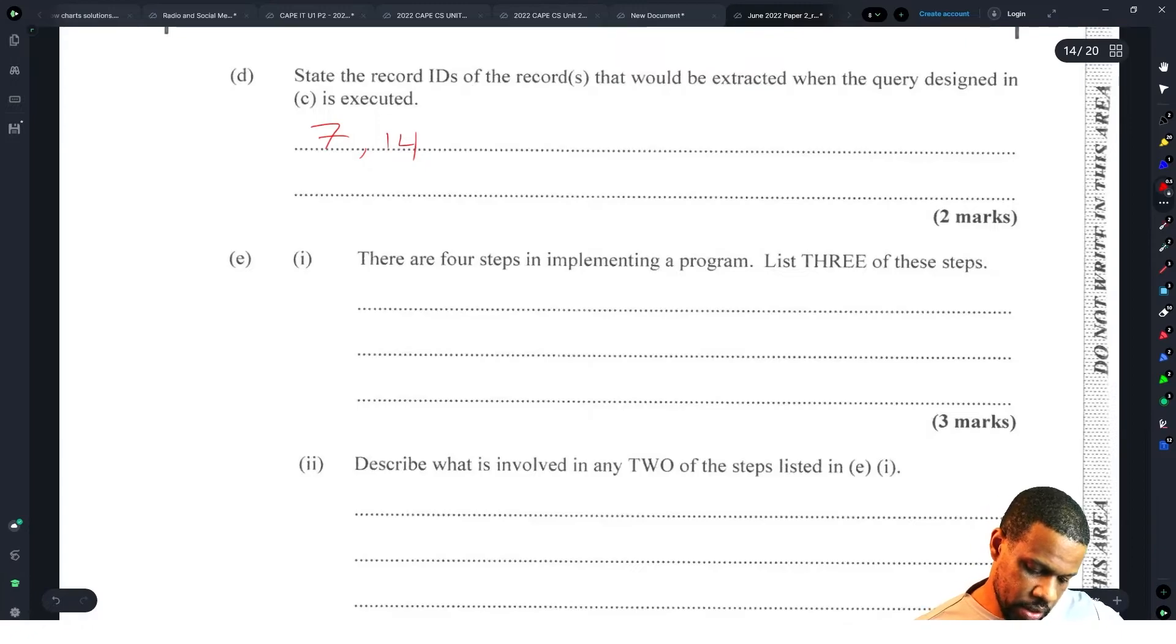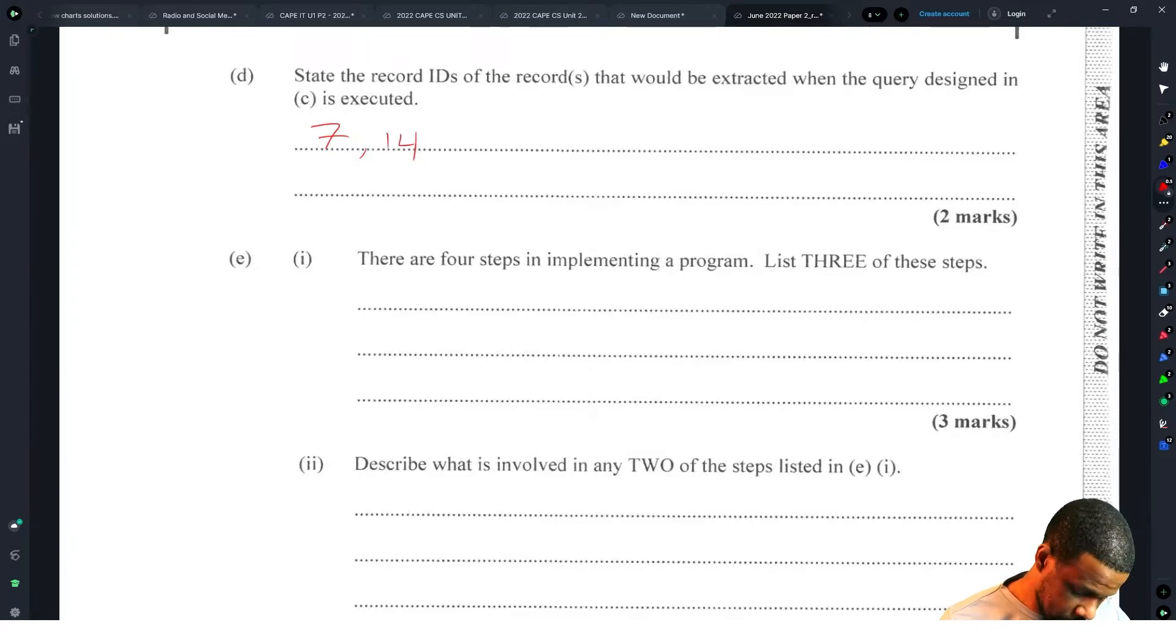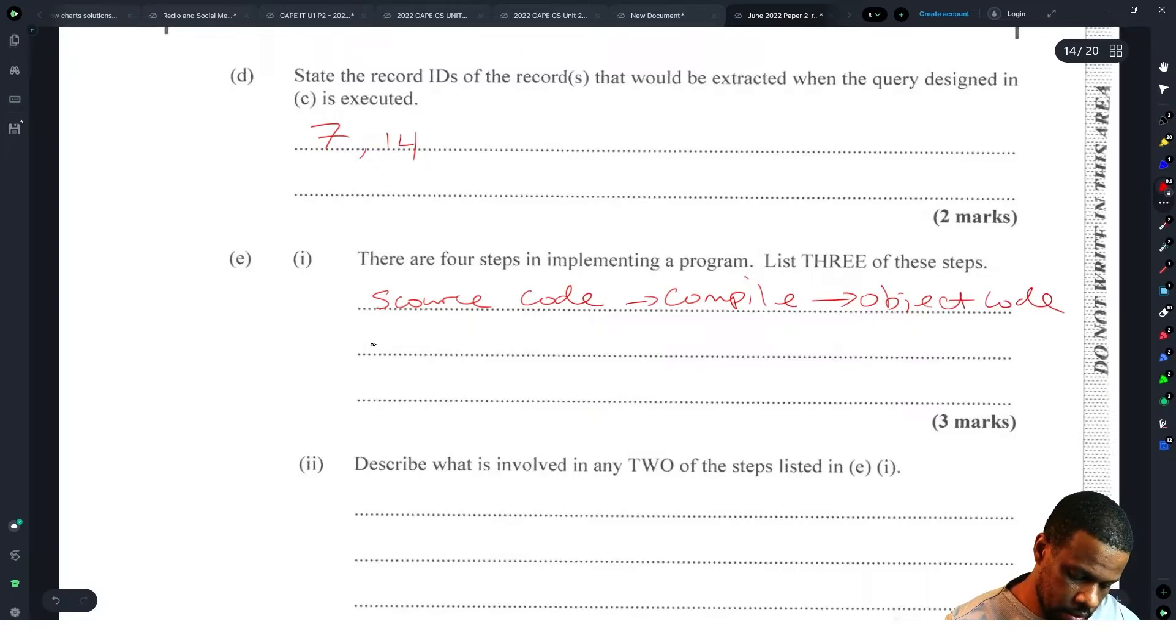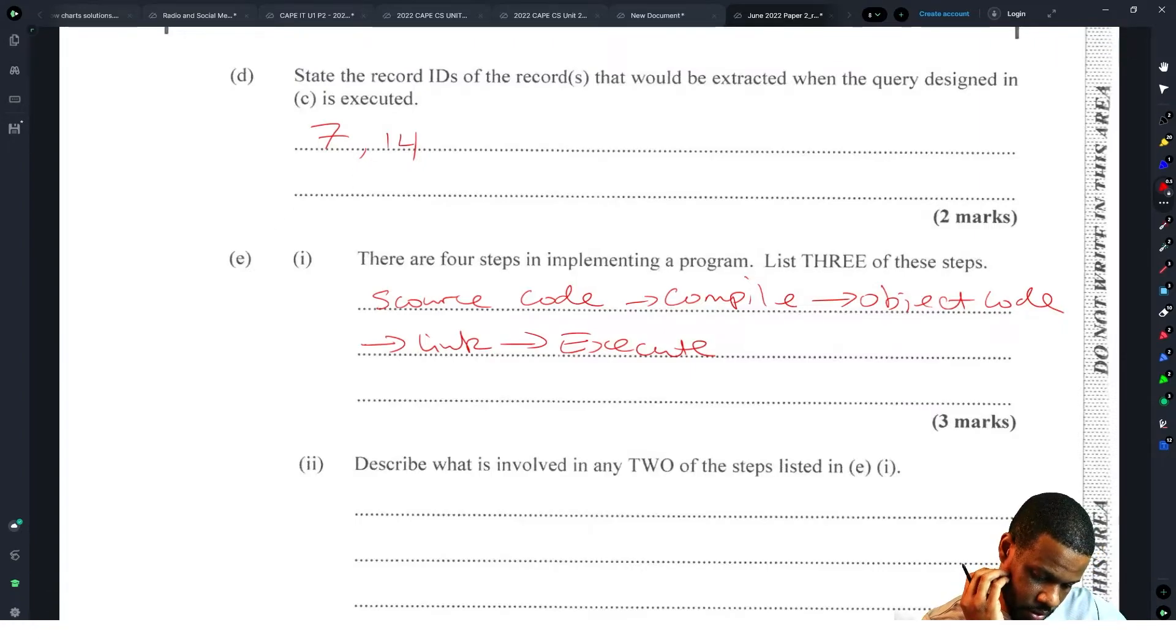There are four steps in implementing a program. State three of these steps. This is source code, compile, object code, and then you have the executable. You type up the source code, you click compile, you get the object code. After you get the object code you link and then you execute.